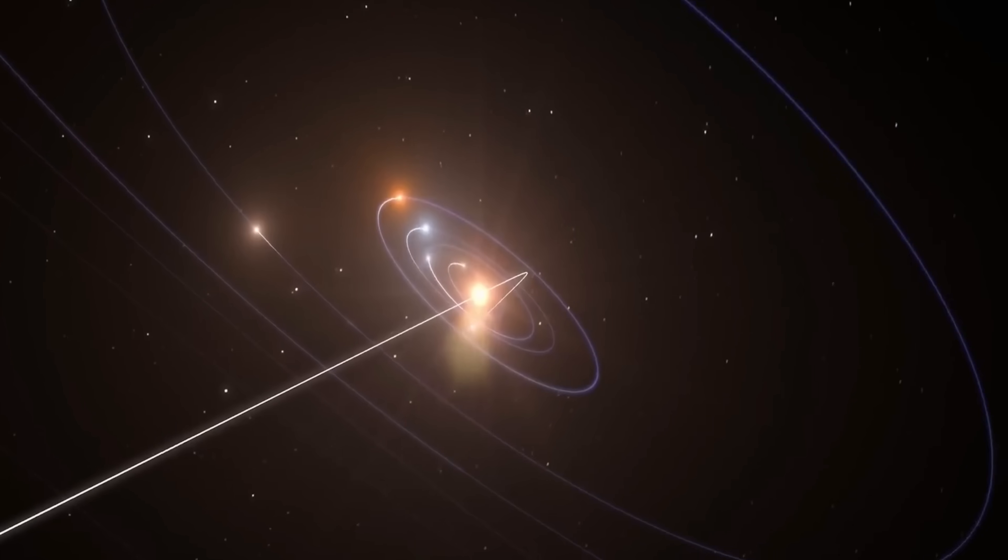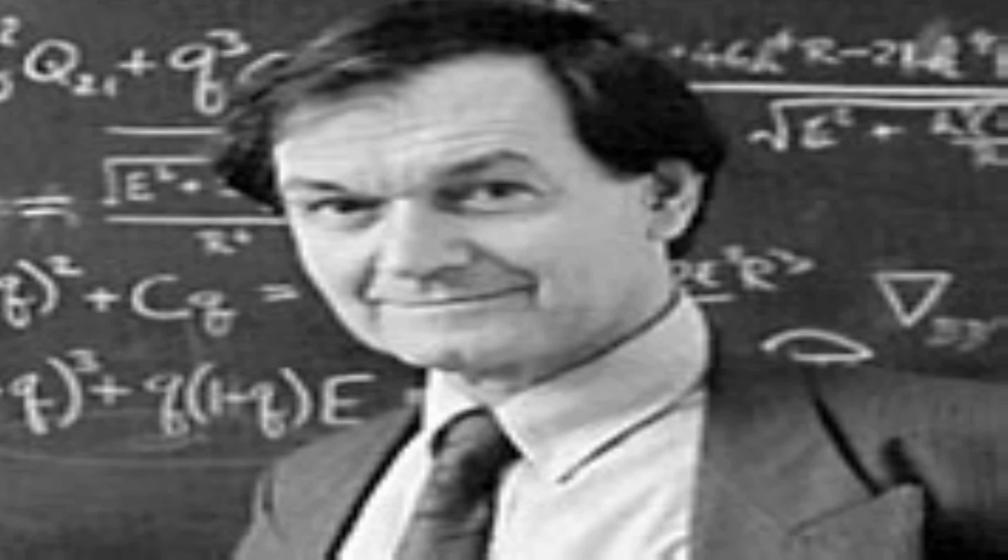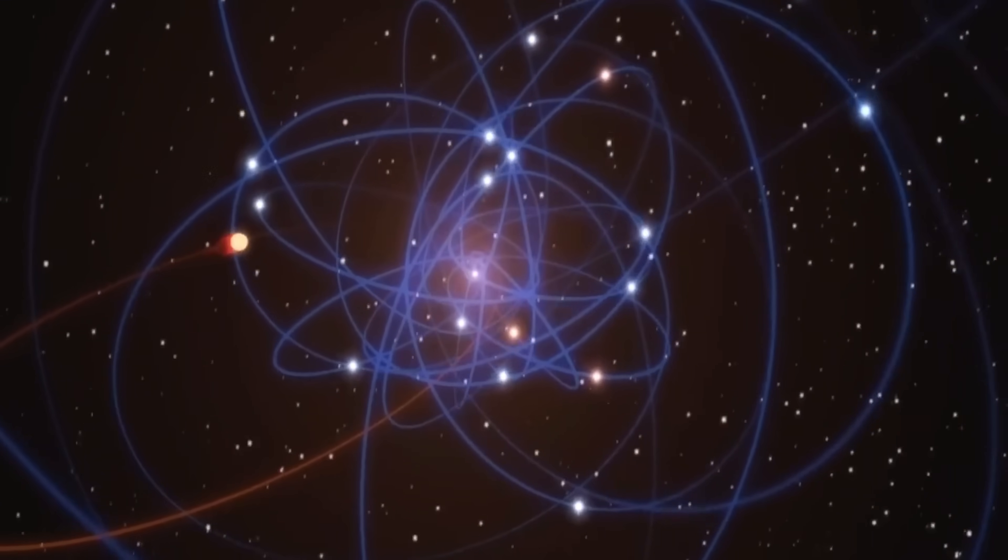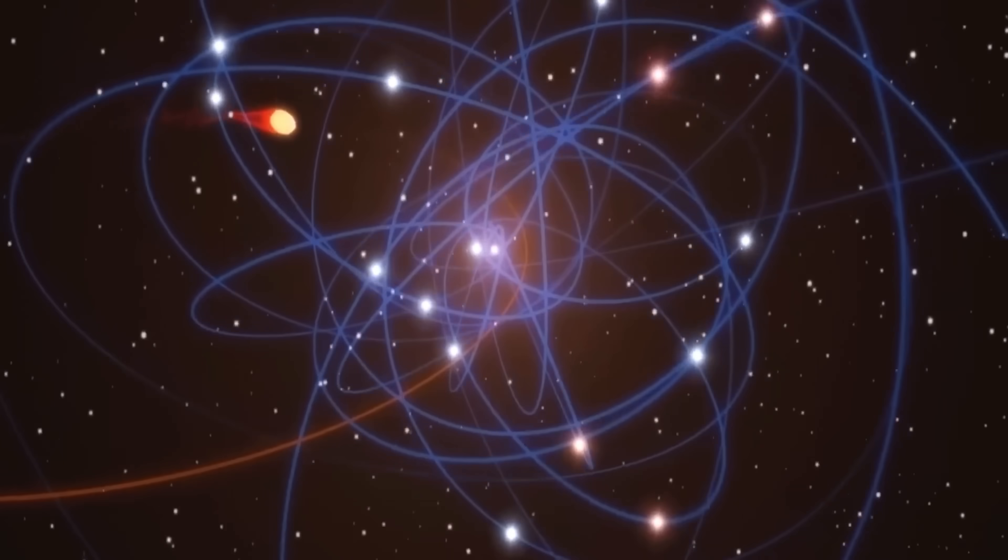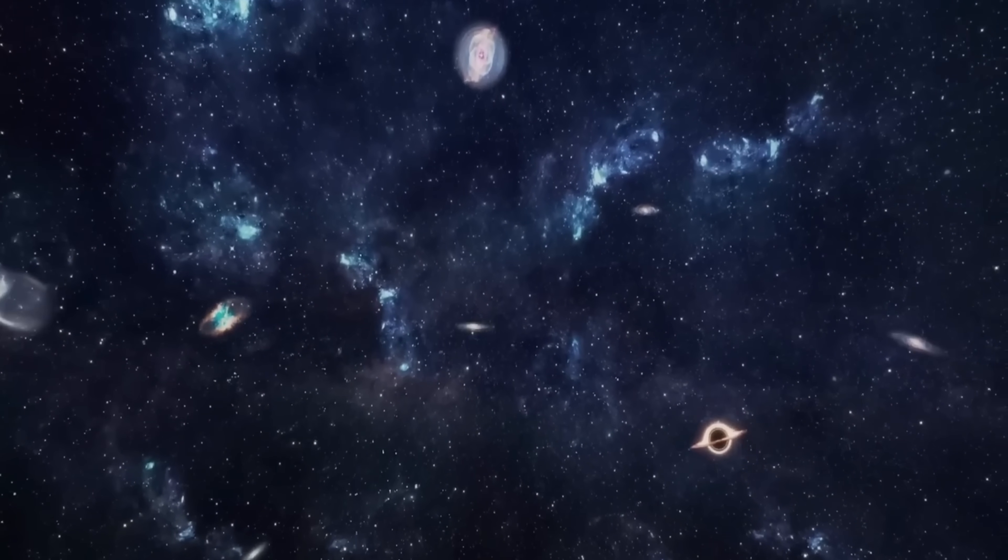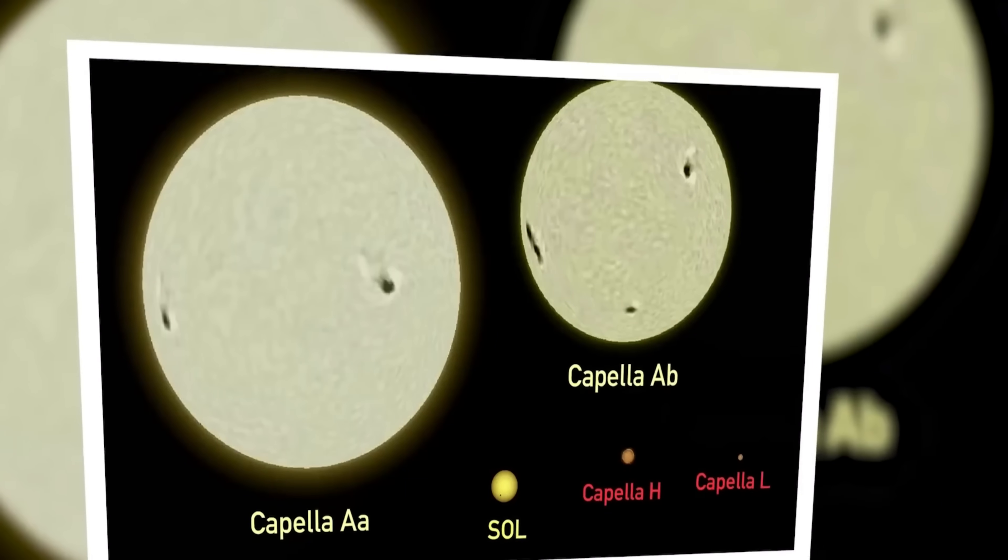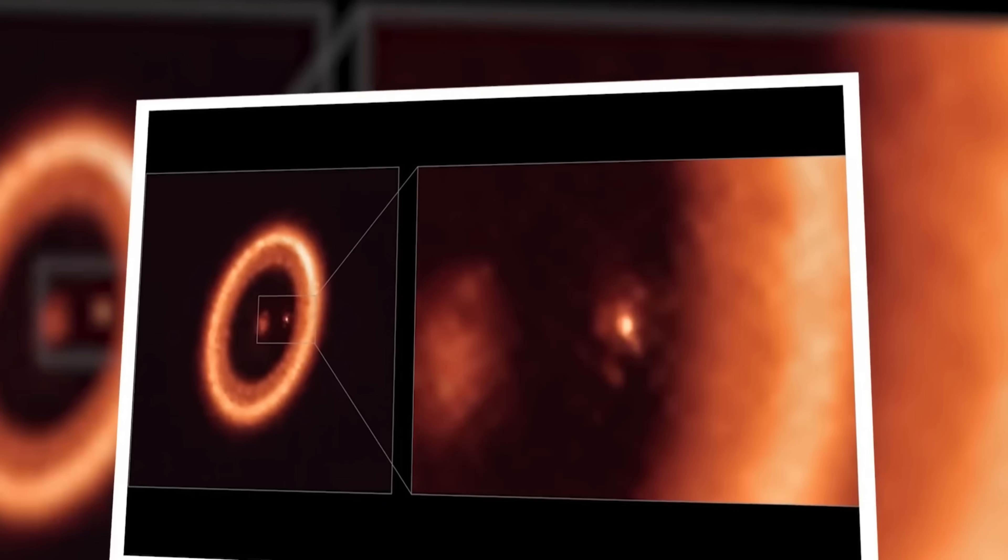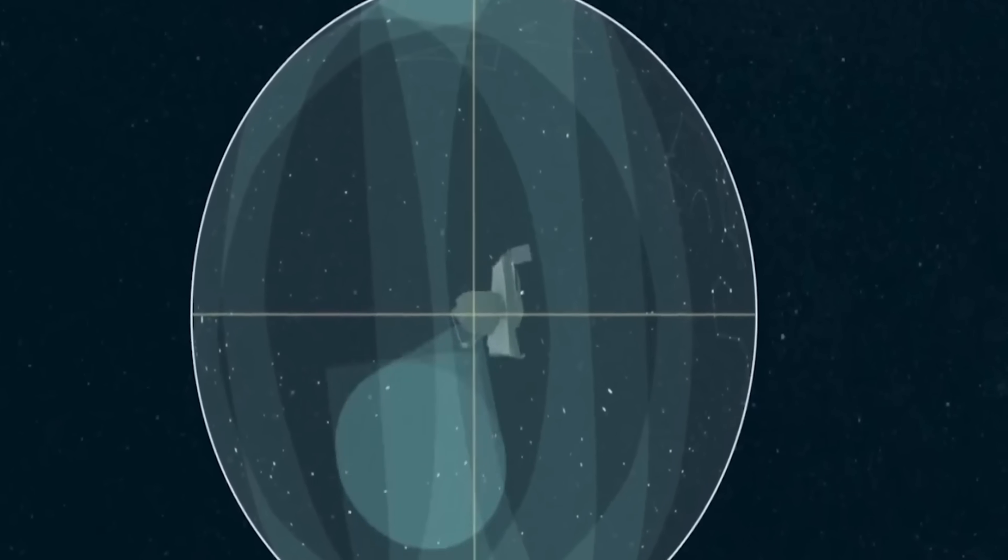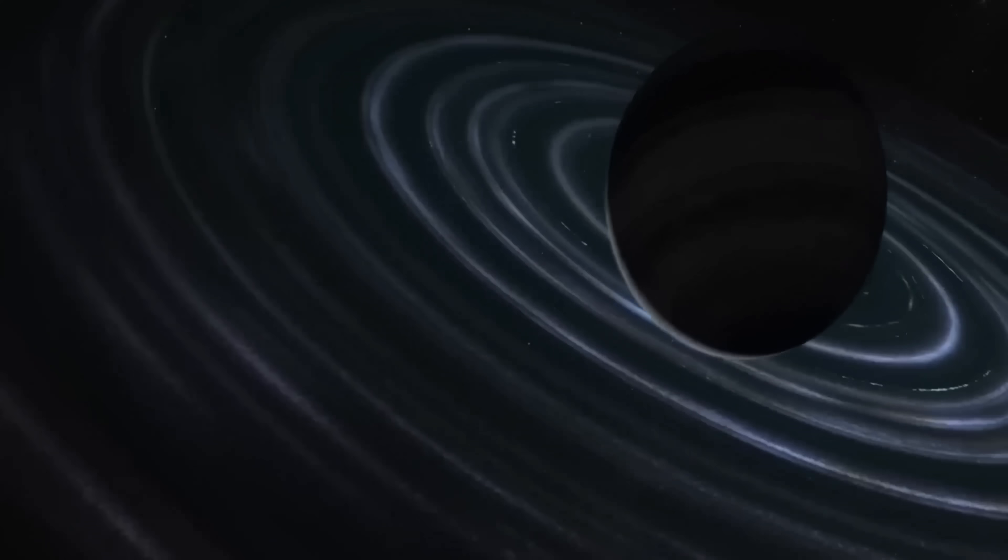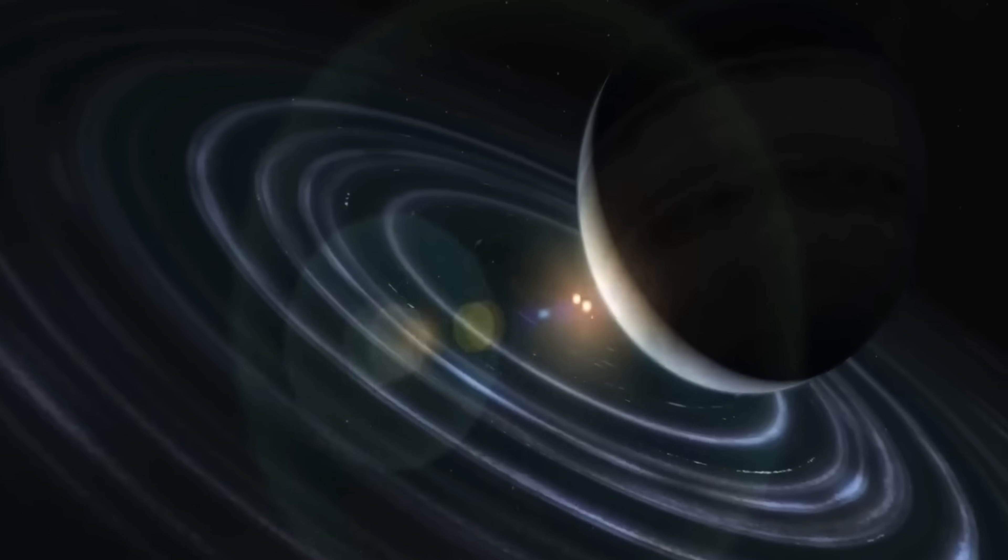and one notable skeptic is Roger Penrose. Roger Penrose's skepticism about the existence of dark matter is rooted in his alternative theory, Conformal Cyclic Cosmology, CCC. Penrose's stance against dark matter is not based on denying the presence of unseen mass, but rather on proposing an alternative explanation for the observed phenomena that dark matter is typically invoked to explain. Penrose's skepticism is multifaceted, and it's essential to understand his arguments in context.